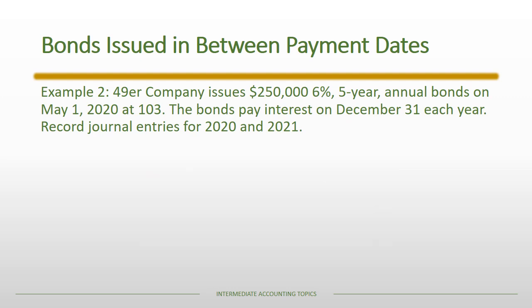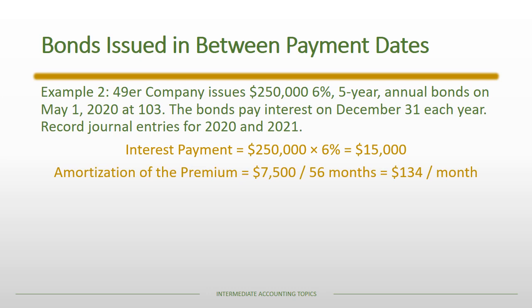As we move through time we have to remember that when recording interest payments and interest expense, the interest expense is a function of both the contractual interest payment and also the amortization of the premium. The interest payment is $15,000 — that didn't change — but now we have the amortization of the premium. The premium balance is $7,500.